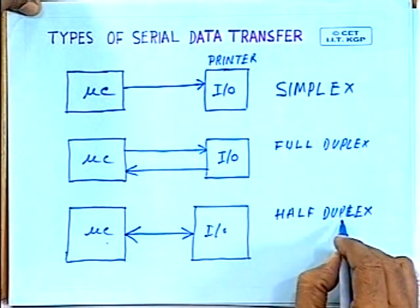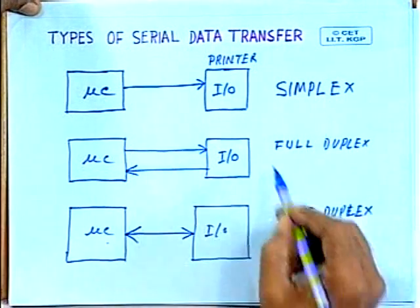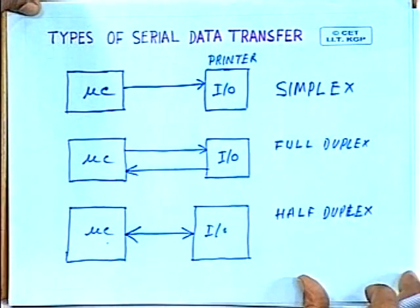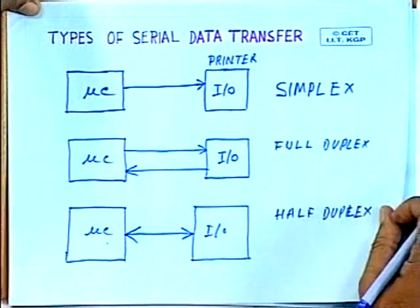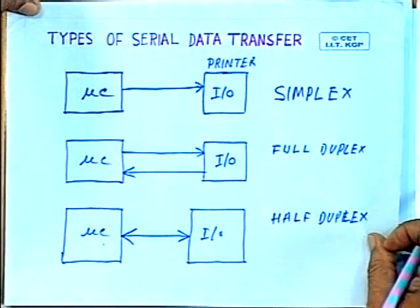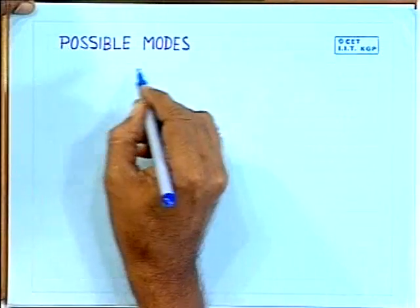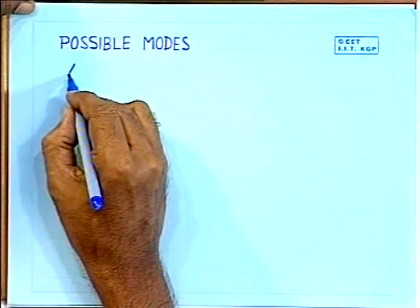Half duplex, full duplex, and simplex — these are the three possible types of serial data transfer in day-to-day use. Now let us see the possible modes by which serial mode of data transfer is implemented. There are two techniques: one is known as asynchronous and the other is synchronous.